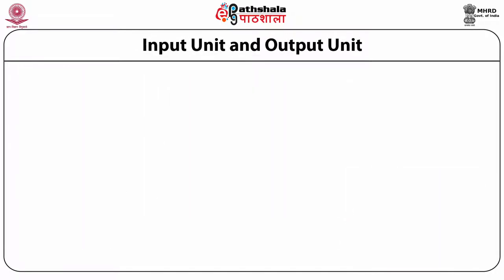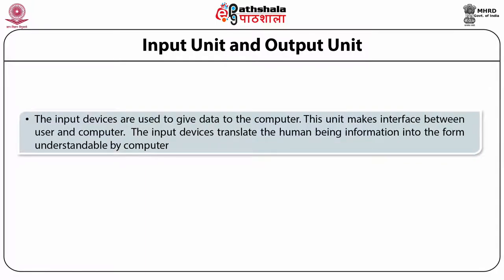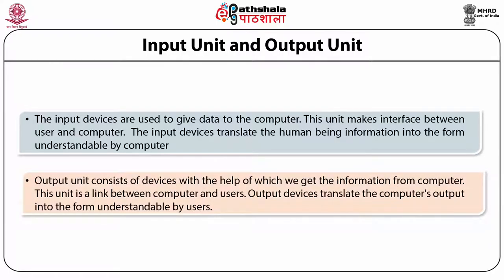Coming to the various parts — input unit and output unit. Input devices or input units are used to give data to the computer. This unit makes an interface between the user and the computer. The input unit translates the human being's information into a form understandable by the computer. The output unit is a device with the help of which we get the information from the computer. This unit is a link between the computer and the user. The output translates the computer's output into the form understandable by the user.